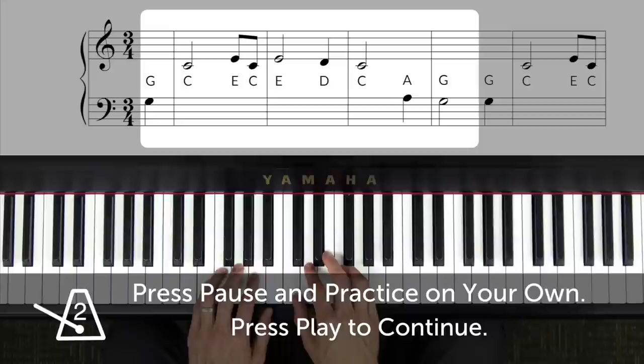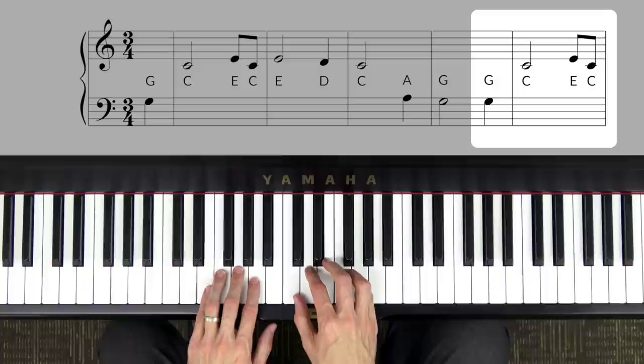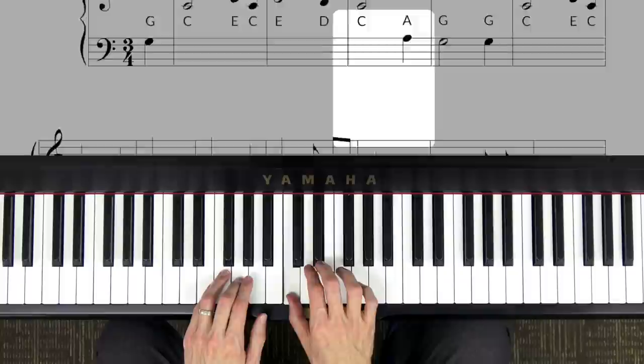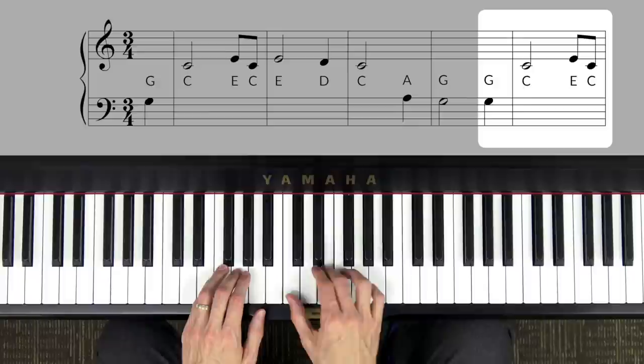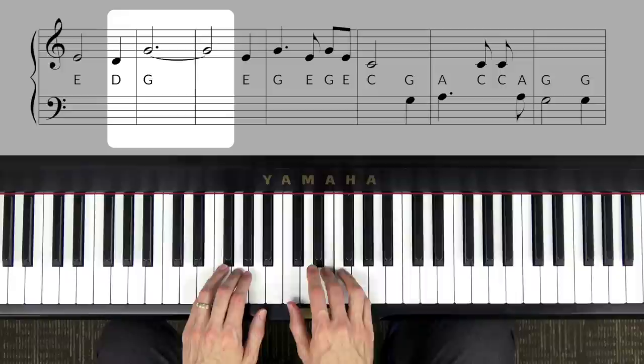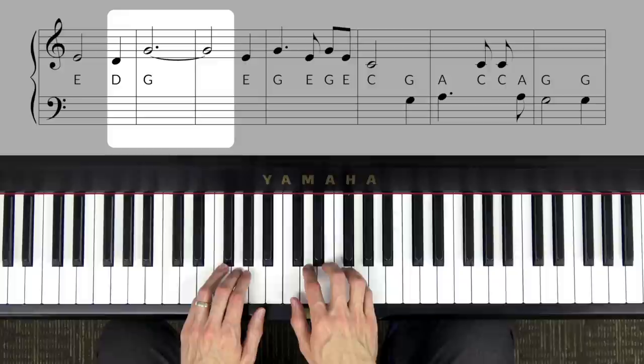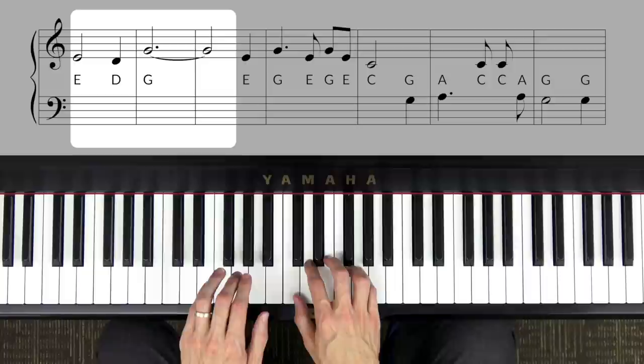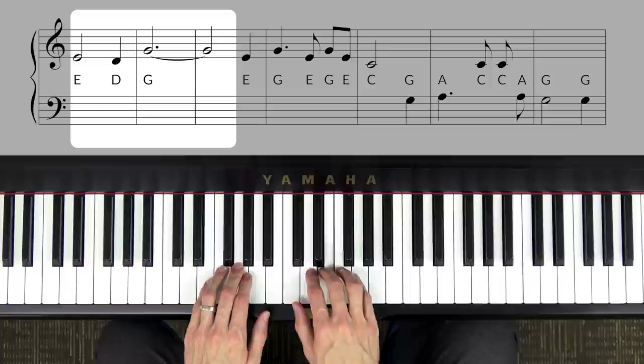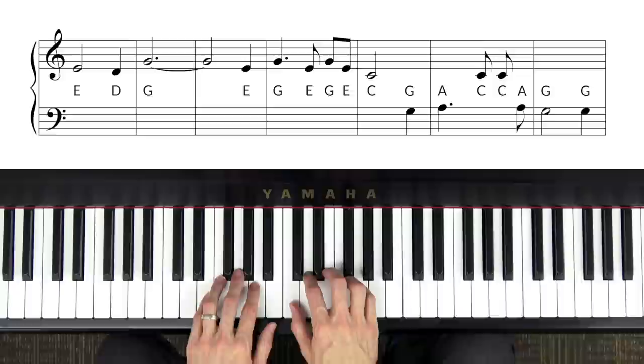Now the next phrase starts off the same way as the first phrase. G, C, E, C, E, and that's for that saved a wretch. And then it's a little different here. It steps down to D, and then skips all the way up to G, with finger 5, which is your pinky. Like me. Okay, so together we get It saved a wretch like me. Now, press pause and work on that phrase on your own, then press play to go on.